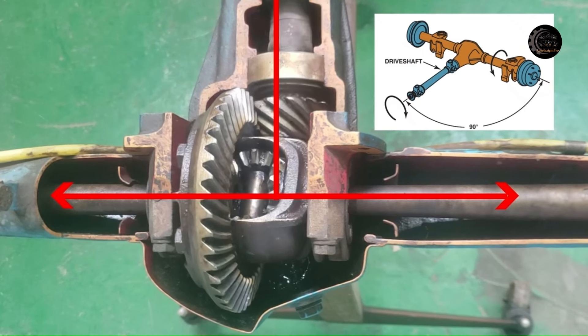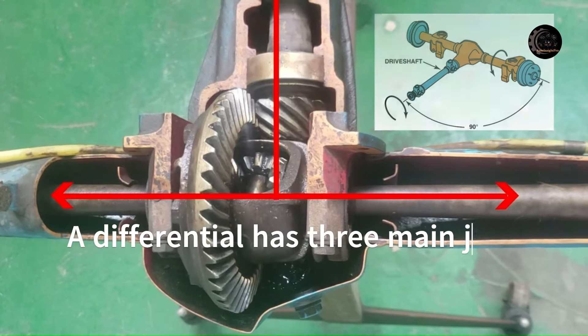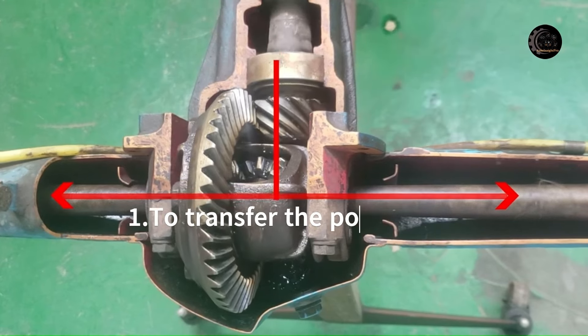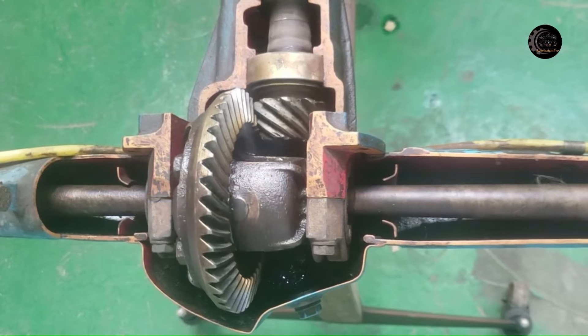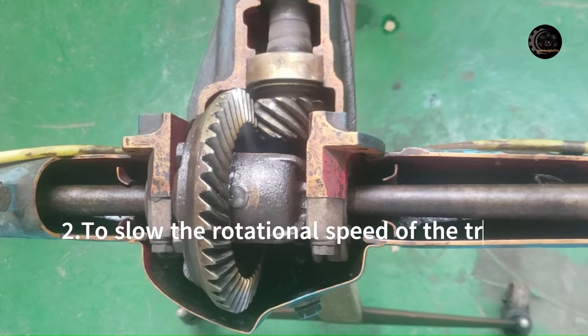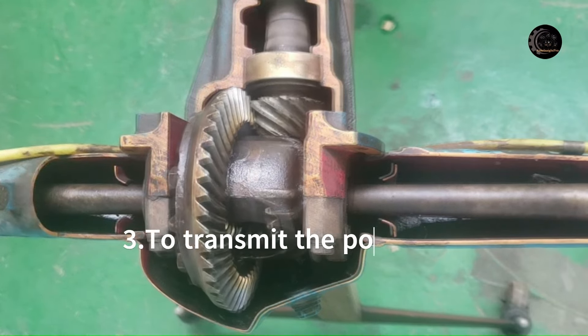A differential has three functions. One is to transfer the power from the vehicle's engine to the wheels. Two is to slow the rotational speed of the transmission before it goes to the wheels. Three is to transmit the power to the wheels while allowing them to turn at different speeds.